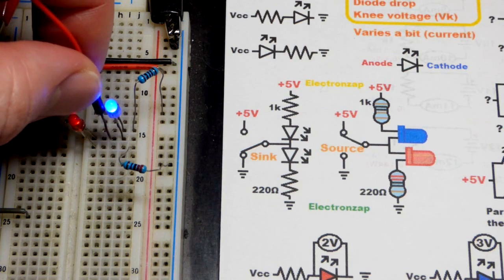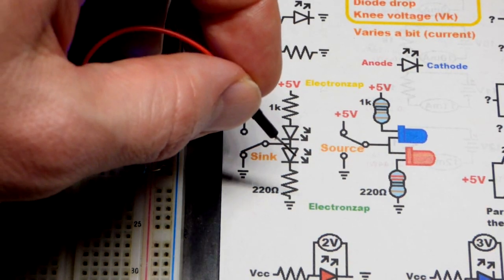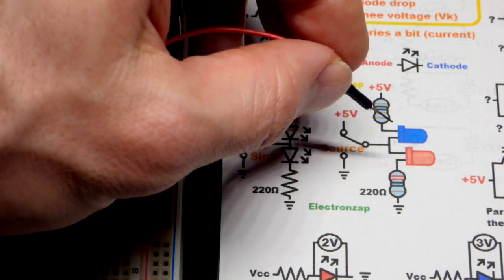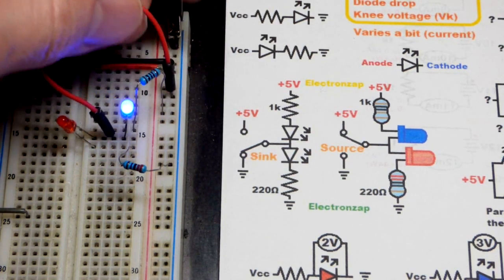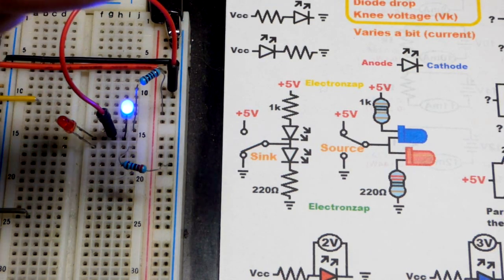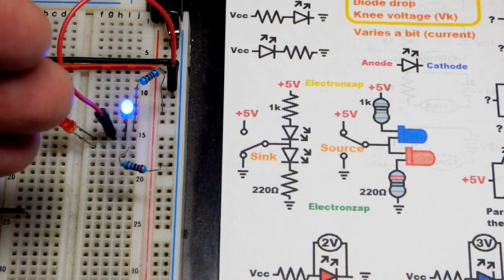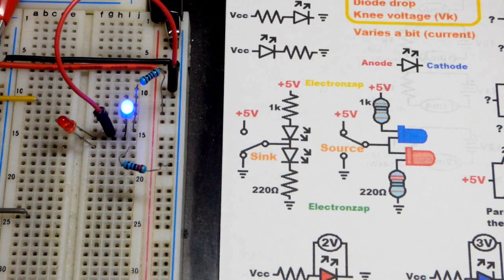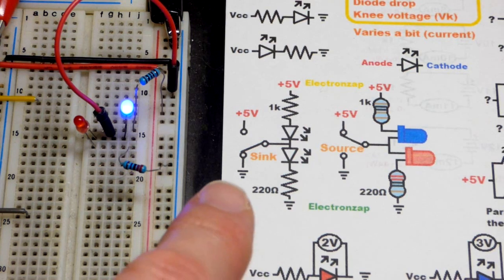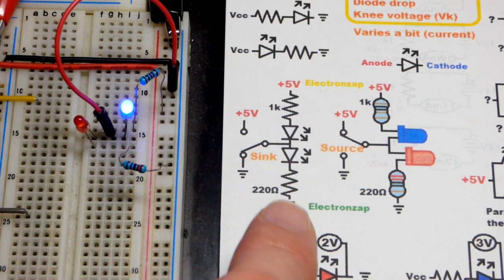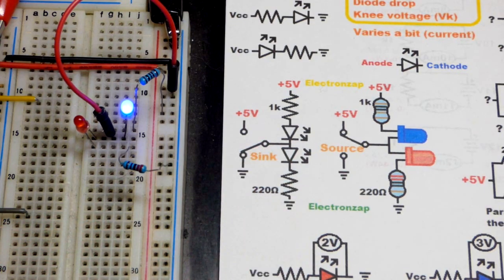I'm going to connect the jumper where the LEDs connect — the long lead, the anode, for the red LED, and the short lead, the cathode, for the blue LED. This side of the blue LED is more positive. If we just want to light up the blue LED, we connect to ground — we're sinking current. The red LED is now off completely because the other side of the red LED is also ground, so current through the blue LED just goes straight to ground and bypasses the red LED.